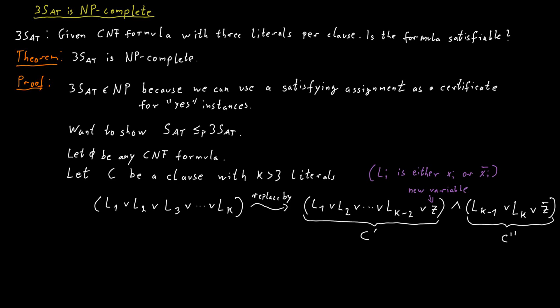I claim that this modification did not change whether the formula is satisfiable or not. If the formula was satisfiable originally, then this clause C must have been satisfiable in the satisfying assignment. So one of the literals in this clause C had to be true. Suppose it's one of the first k-2 literals in the clause.